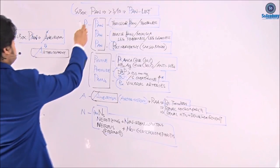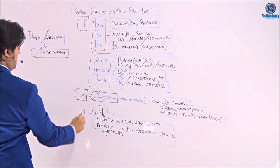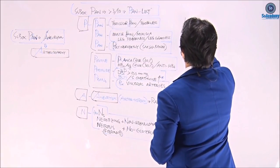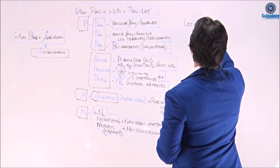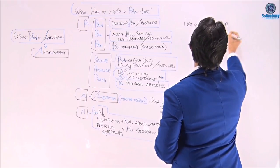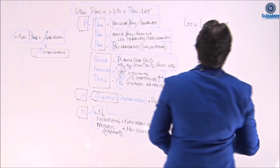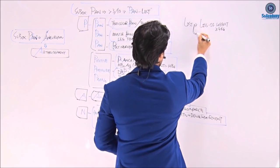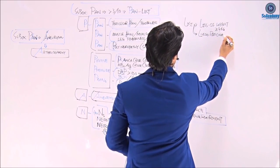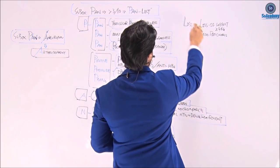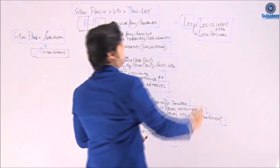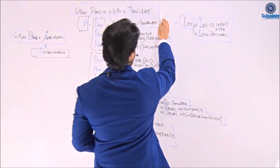This covers PAN — P, A, and N bundle packs. Now for LOST: L stands for loss of weight — 4 kg or more — and L also stands for livedo reticularis. These are the L bundle pack diagnostic criteria.